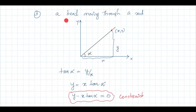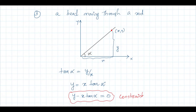Third example: a bead moving through a rod in the xy plane. The rod is inclined at an angle α with the x axis, and the bead is restricted to move only along this rod. The position at any instant is specified by x and y, but since the bead is constrained to the rod, x and y are not independent. We have tan α = y/x, so y = x·tan α, or equivalently y − x·tan α = 0 always. This is a constraint.